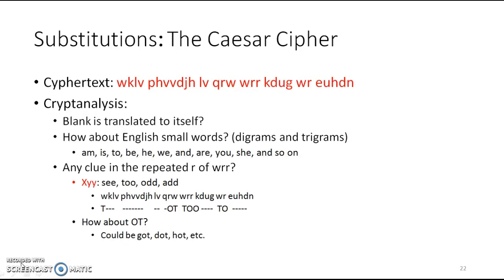How can we do the cryptanalysis for that ciphertext? A blank space is translated to itself. We look at English small words — diagrams and trigrams — like 'me', 'to', 'he', 'we', 'are', 'she', and so on — two-alphabet words and three-alphabet words. Any clue in the repeated patterns, like 'wrr' — what can 'wrr' be? It can be like 'c2' or 'add', like a pattern x-y-y.